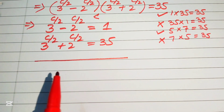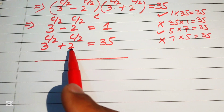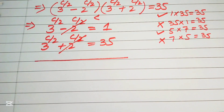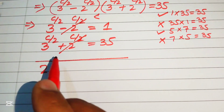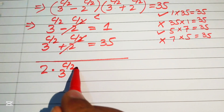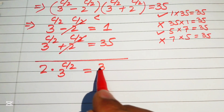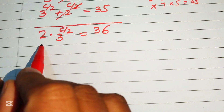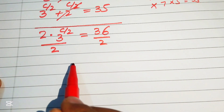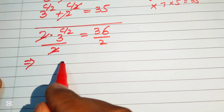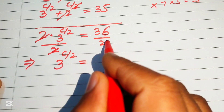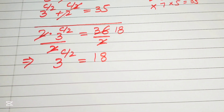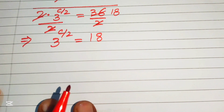Adding these two equations, the +2^(c/2) and −2^(c/2) cancel each other, giving 2 times 3^(c/2) equals 1 plus 35, which is 36. Dividing both sides by 2 eliminates the 2 on the left hand side, and we obtain 3^(c/2) equals 18.